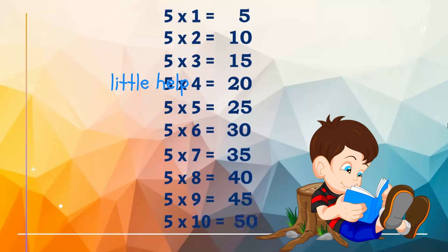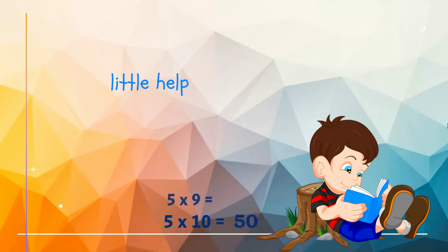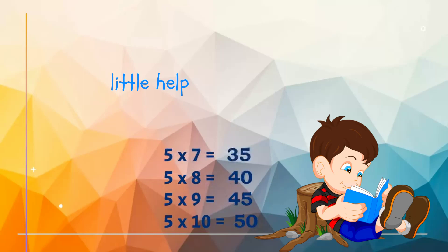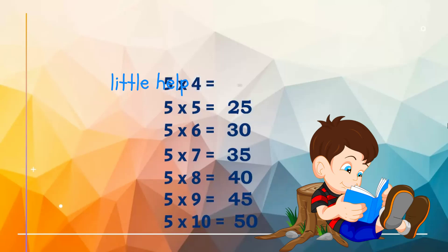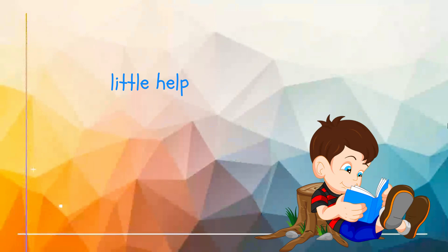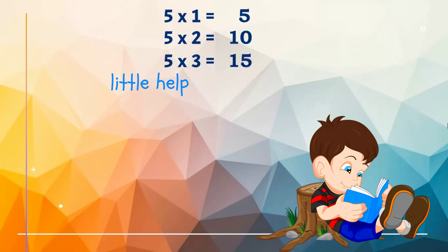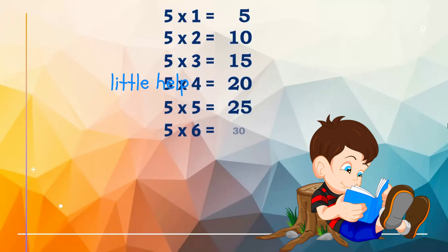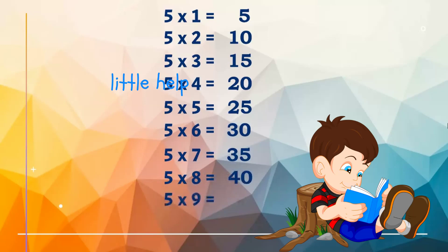Five tens are fifty, five nines are forty-five, five eights are forty, five sevens are thirty-five, five sixes are thirty, five fives are twenty-five, five fours are twenty, five threes are fifteen, five twos are ten, five ones are five. Five ones are five, five twos are ten, five threes are fifteen, five fours are twenty, five fives are twenty-five, five sixes are thirty, five sevens are thirty-five, five eights are forty, five nines are forty-five, five tens are fifty.